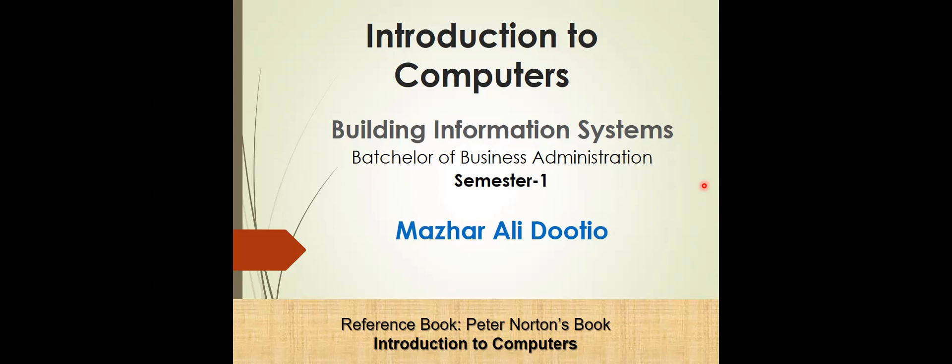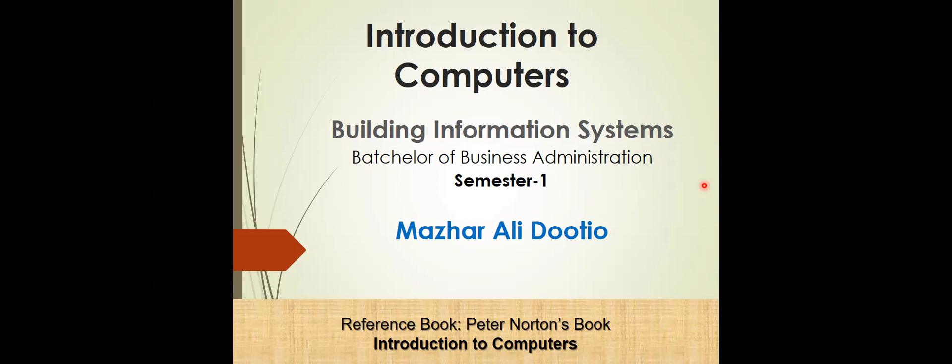These definitions focus on two different ways of describing information systems: the components that make up an information system, and the role that those components play in an organization. We discussed both the components and the role they play in the previous lecture on the basics of information systems, which is also available online. Today we are going to discuss building information systems — why we should develop the information system to run the organization.